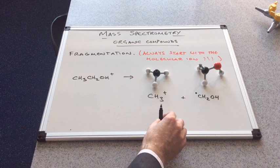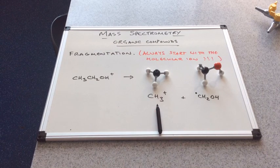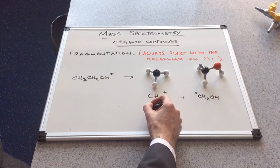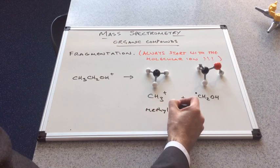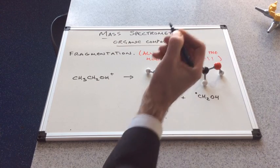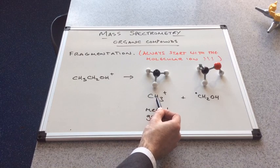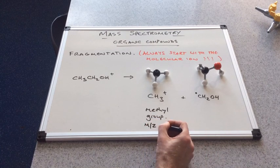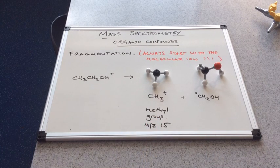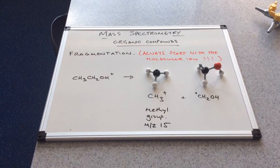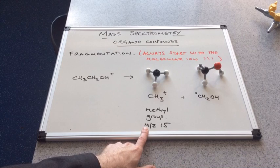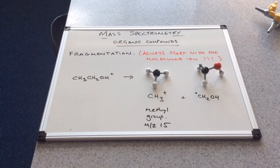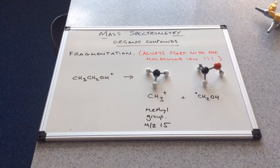Remember, mass spectrometers can only measure positively charged ions. So the way I've drawn that, this ion here would be detected. This is a methyl group. The mass of this group is 12 plus 3, so that would have a mass-to-charge ratio of 15. A very common fragment peak in organic mass spectra is a peak at 15, M over Z at 15. That's because many organic molecules contain methyl groups. So that's one example of a fragment peak.